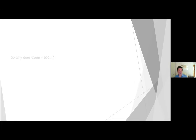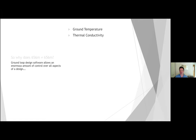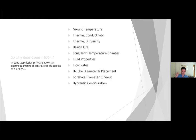Why does 656 metres not equal 656 metres? Well, the groundwork design software allows us an enormous amount of control over all aspects of the design — not just the obvious ones like ground temperature and thermal conductivity that you have control over with the MCS tables. There's a huge list, and most of these are not just a single parameter but actually a number of parameters. For example, we can adjust the thermal diffusivity — analogous to conductivity — which is how quickly temperature differences propagate throughout the ground, or put another way, how much interference you get between boreholes. It's a really core parameter in groundwork design that you simply do not have control over in the MCS tables.